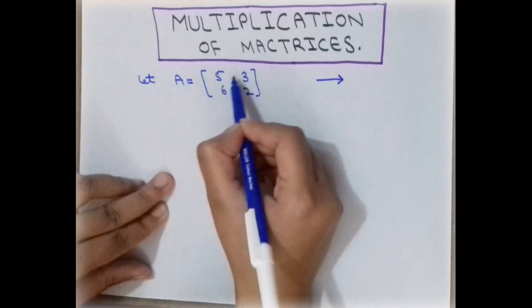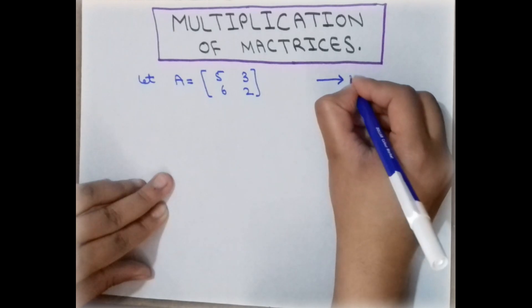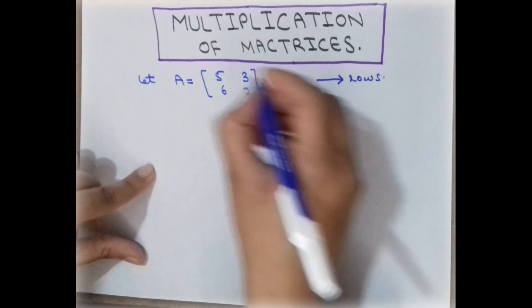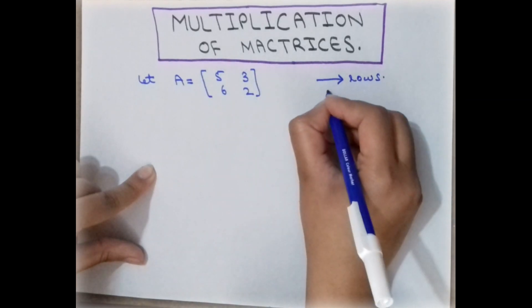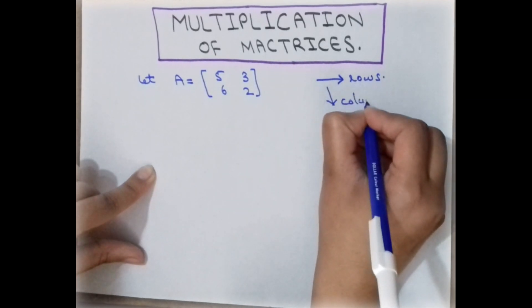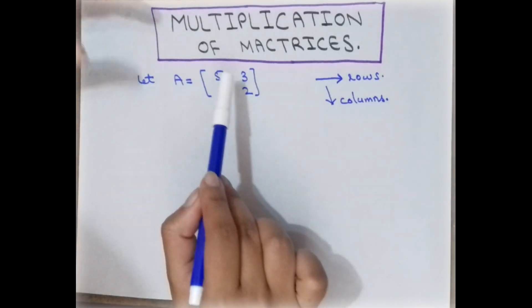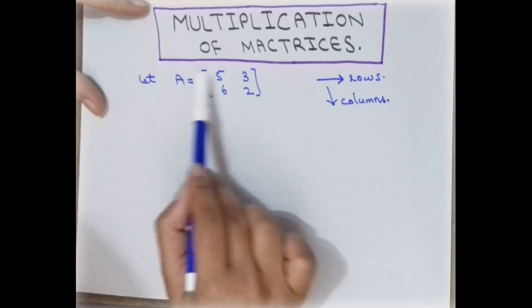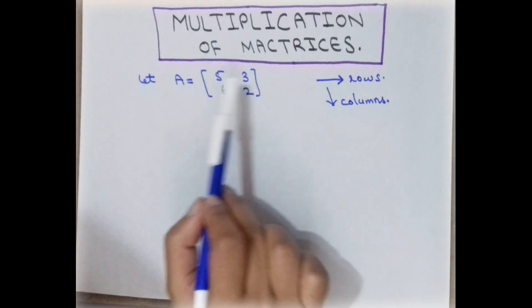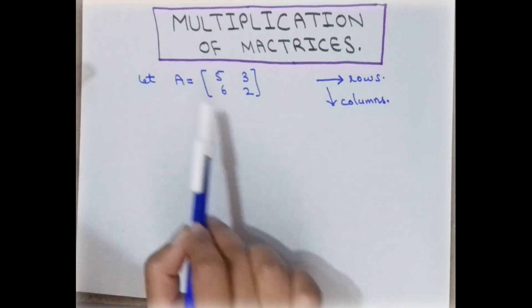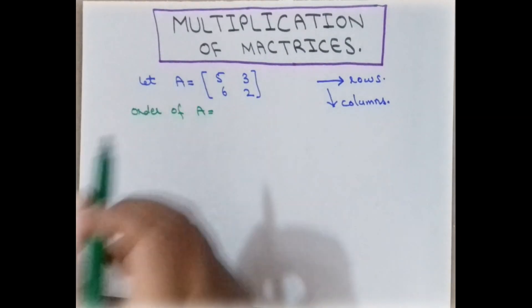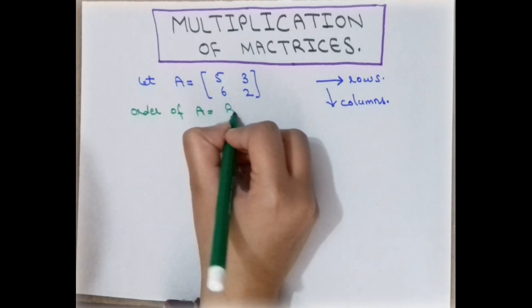The entries in a horizontal way are rows, and the entries in a vertical direction are columns. In this matrix there are two rows and two columns. The number of rows and number of columns specifies the order of the matrix, so the order of matrix A is row by column.